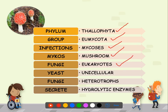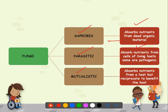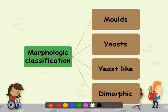Yeast fungi are unicellular organisms, and fungi are heterotrophs. These fungi have hydrolytic enzymes which help them obtain food. Fungi are classified as saprophytes, parasitic fungi, or mutualistic fungi. Saprophytes absorb nutrients from dead organic material, parasitic fungi absorb nutrients from a living host, and mutualistic fungi absorb nutrients from a host while also reciprocating benefits to the host. Morphologically, they may be molds, yeast, yeast-like fungi, or dimorphic fungi.